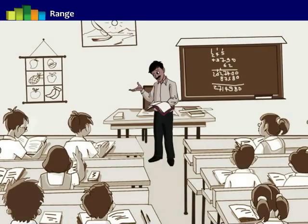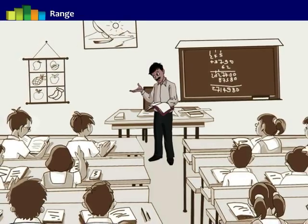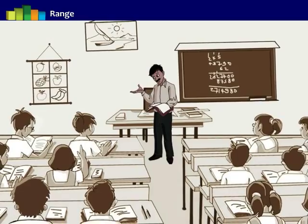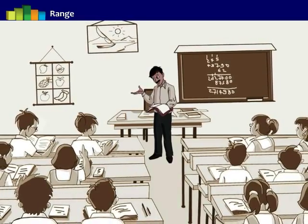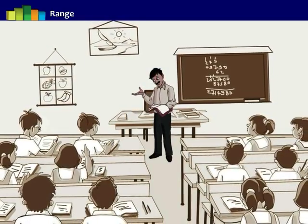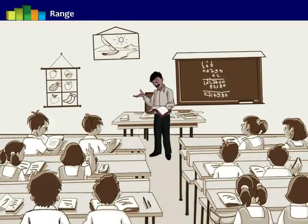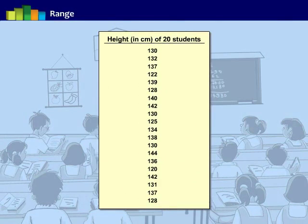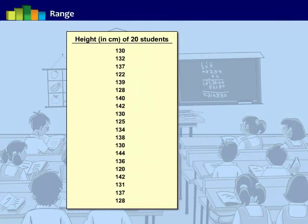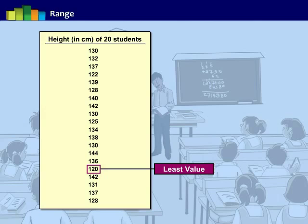A teacher wanted to keep the records of the height of 20 students for sports. So he asked each student to tell their height in centimeter. The height in centimeter of 20 students in a class was recorded by him as follows. Here we can see the least value is 120 centimeter and the highest value is 144 centimeters.